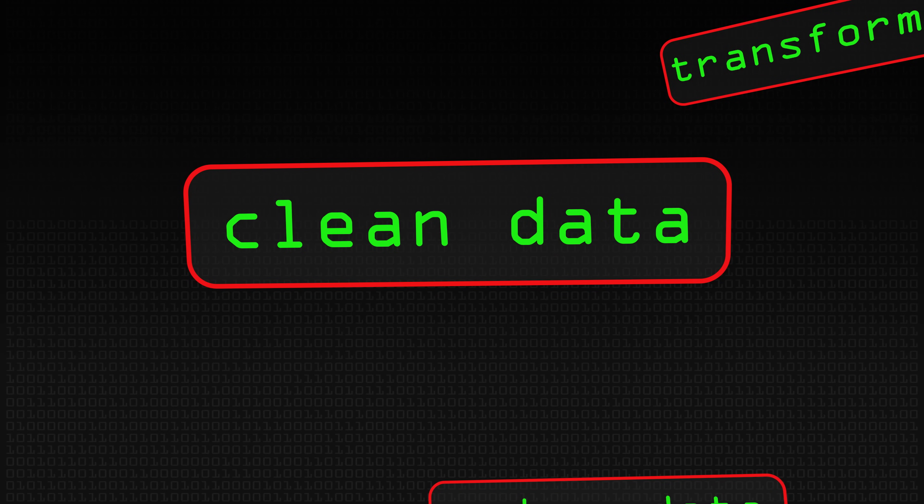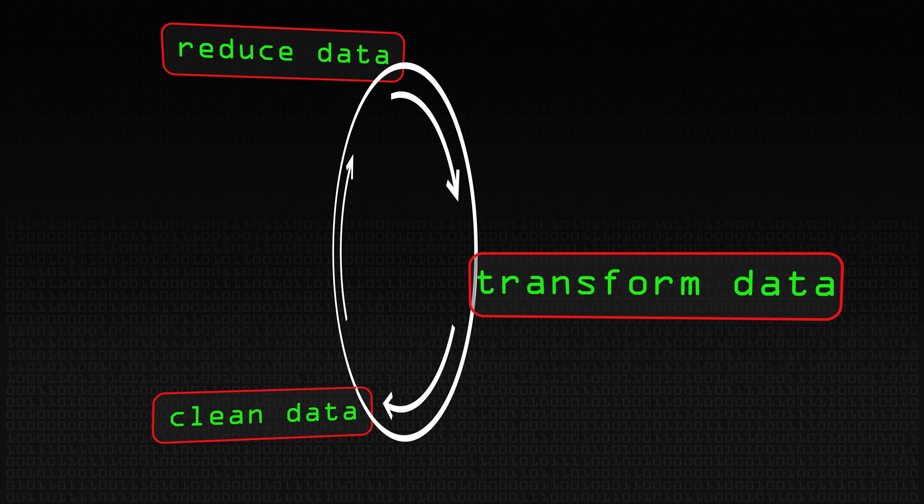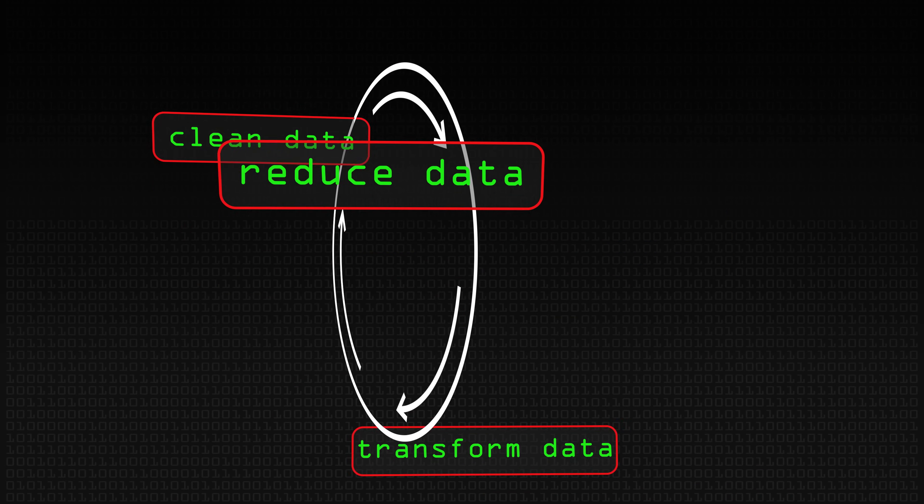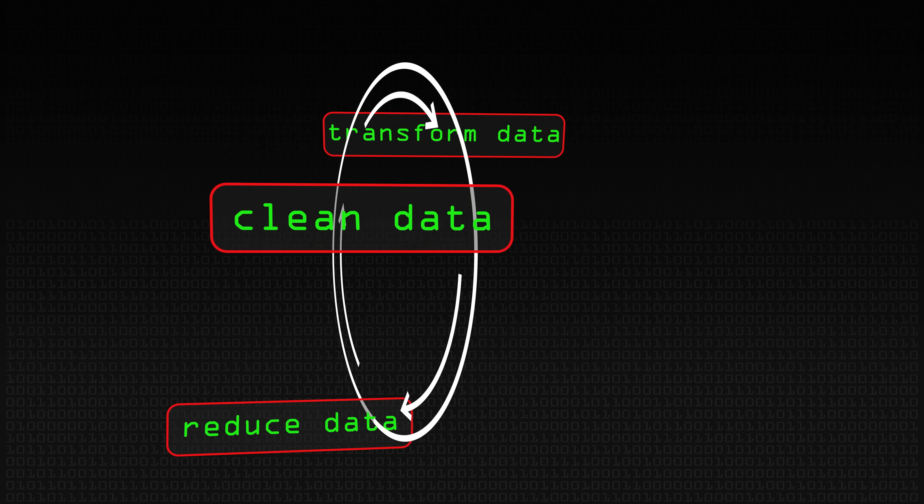This is going to be a kind of iterative process. We're going to need to clean up our data to make it as useful as possible, we need to transform it so that we can combine datasets together and statistically measure them, and then we're going to need to reduce it sometimes if our dataset is too big and unmanageable. This combination of cleaning, transforming, and reducing data is a cycle we iterate until our dataset is in its smallest, most useful form.